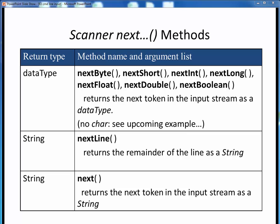Once you have your Scanner object on hand, here are some of the typical things you'll want to do with it. First, the Scanner class provides these seven methods for reading the next individual token from the input stream as an individual variable of the specified data type. So with these, we can read in one int variable, or one double variable, and so forth. You may notice that there is no nextChar method provided. So how do we read in an input char variable? We'll see how to do that in an upcoming example — it's actually quite simple.